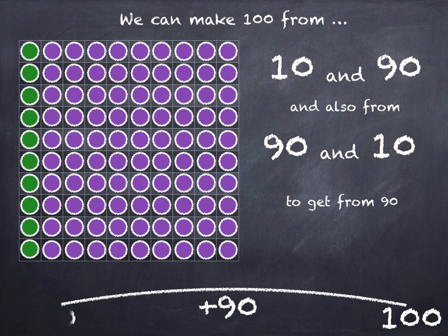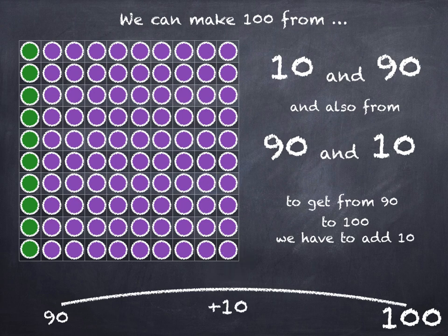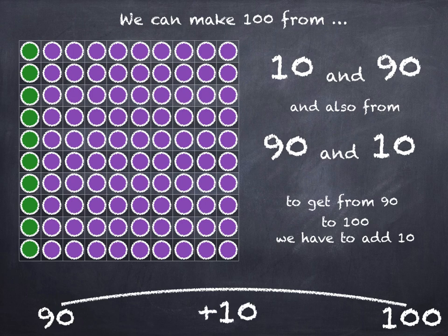To get from 90 to 100, we have to add 10. 90 plus 10 is 100.